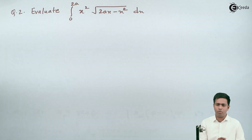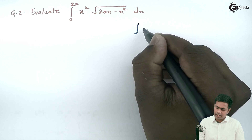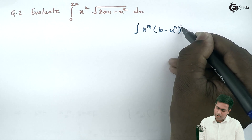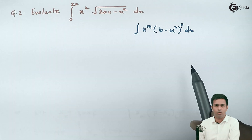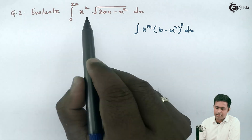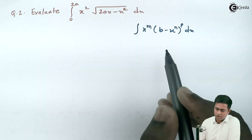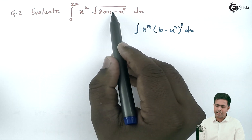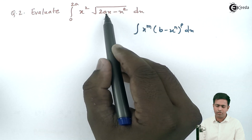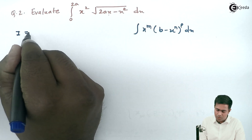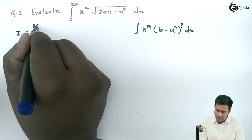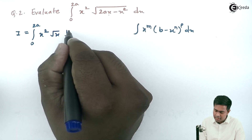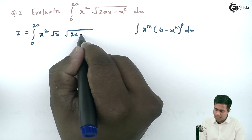If we observe, this form is matching with the standard form: integration of x raised to m times (b minus x raised to n) whole raised to p dx. If we compare, m is 2. However, b should be a constant but here we have x alongside b. So what I can do is take x common from both terms under the root, giving us x squared times root x times root of (2a minus x).